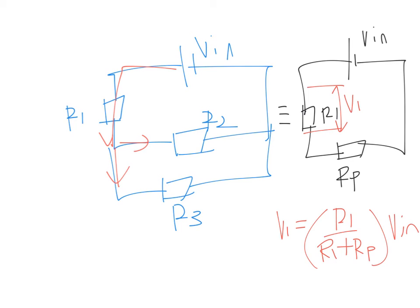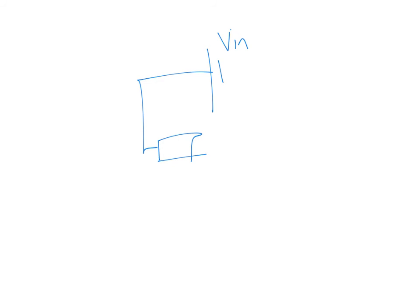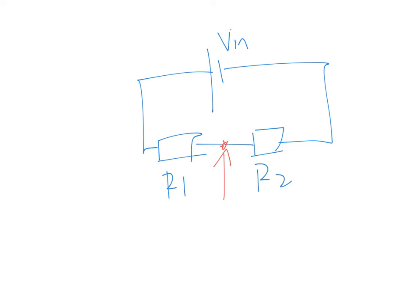We can also use this formula to find the potential at a point. Potential difference and potential are not the same — potential difference is the difference between two points, whereas potential is at a single point. So if you want to find the potential at a point in the circuit, you must first find the PD from one side or the other, then figure out the potential there.